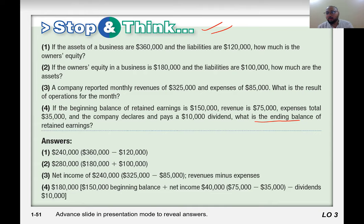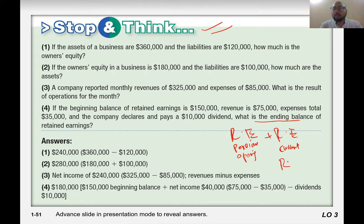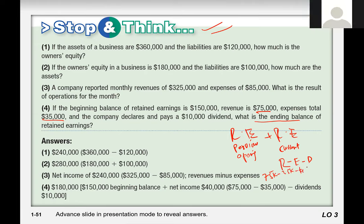If the beginning balance of retained earnings is $150,000, revenue is $75,000, expenses are $35,000, and the company declares and pays a $10,000 dividend — what is the ending balance of retained earnings? The formula is: opening retained earnings, plus current year retained earnings, where current year = revenue minus expenses minus dividend. So: $75,000 minus $35,000 minus $10,000 equals $30,000.